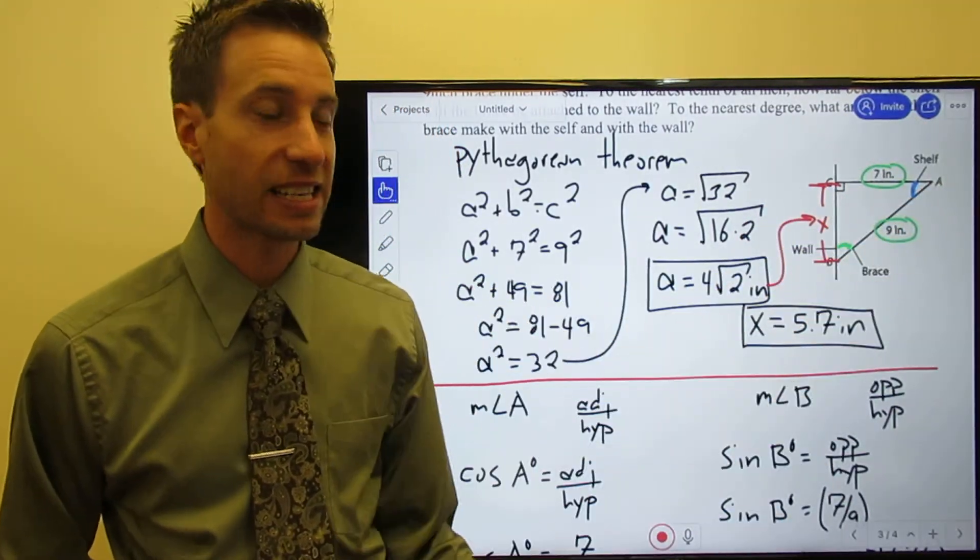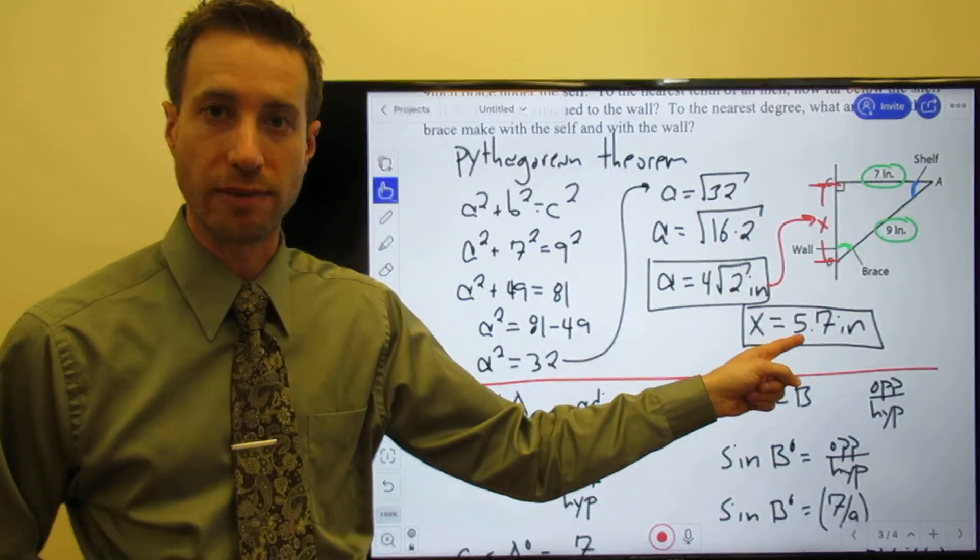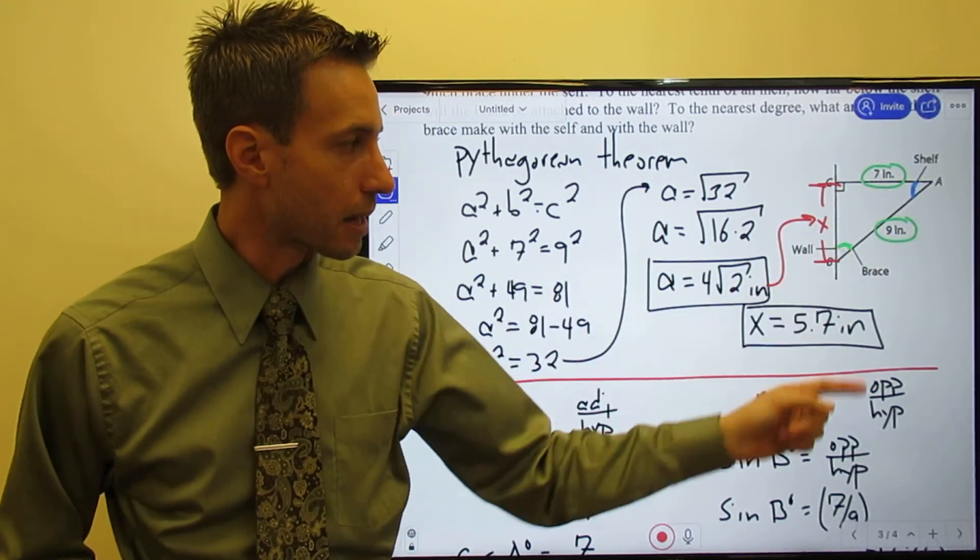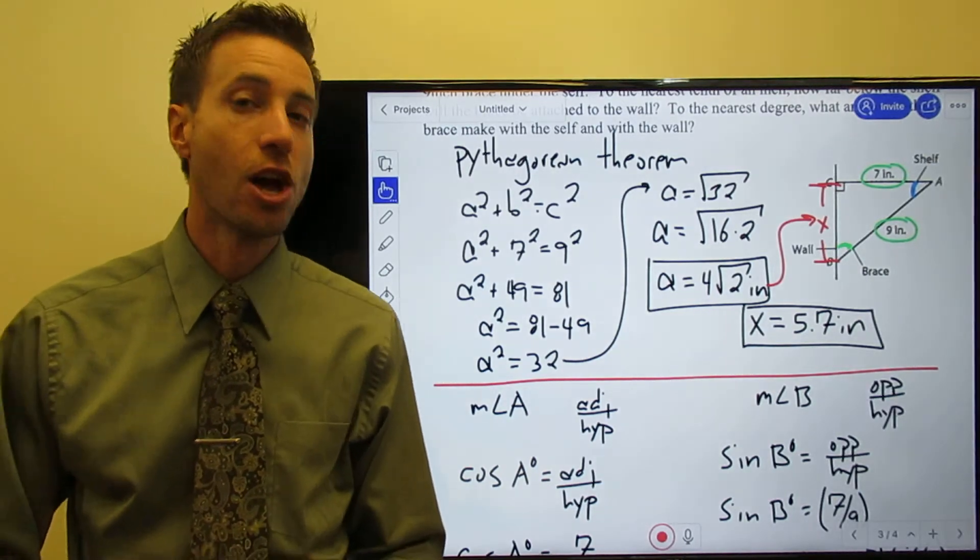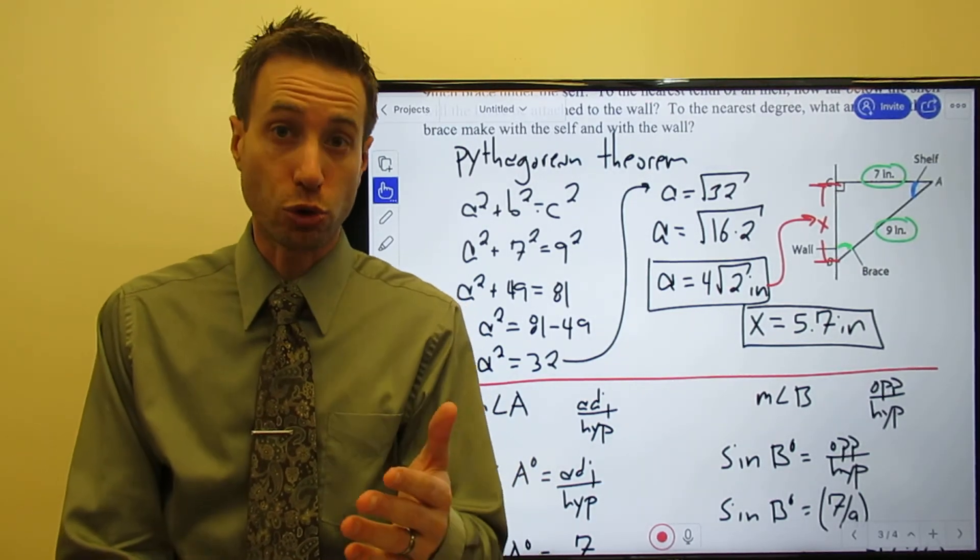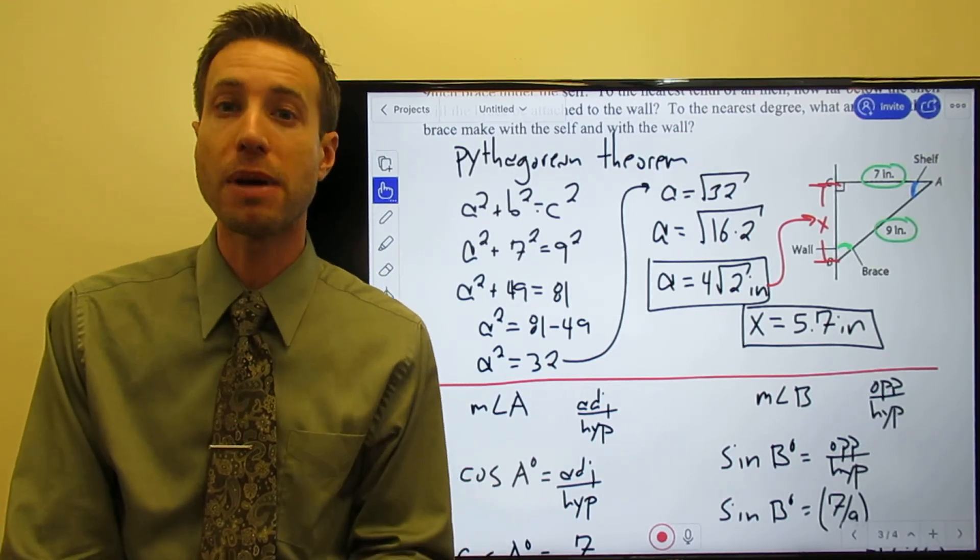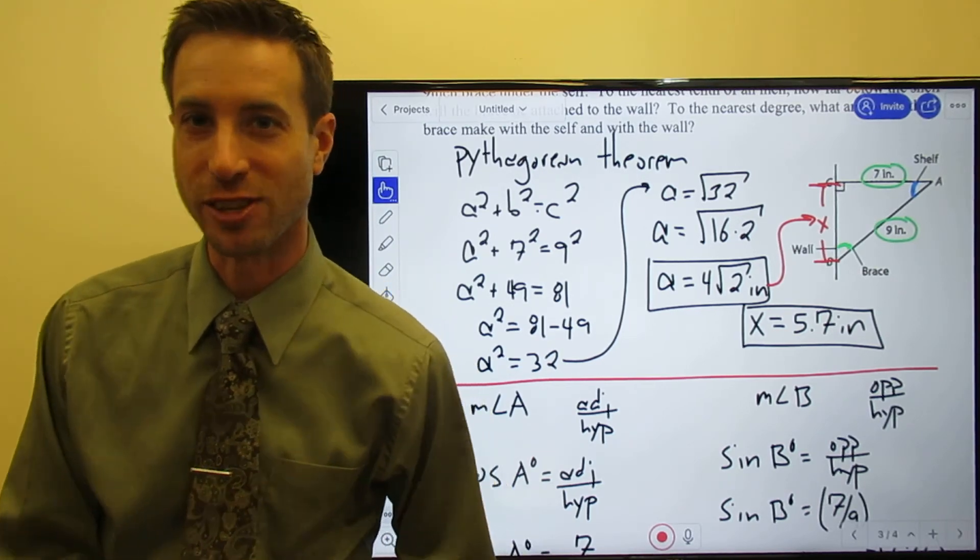We now know everything. I know the length of the shelf is 7 inches, I know the length of the brace is 9 inches, and I know how far down the wall that brace is attached to the wall - 5.7 inches. I know all the angles: this one was 90, this one was 39, and this one came out to be 51. I now know everything about that triangle. All right guys, head on over to the next page of the notes. We'll try another problem just like this where we've got to find the unknown measures of either lengths or angles, and trig functions will be the way to do it. I'll meet you there.